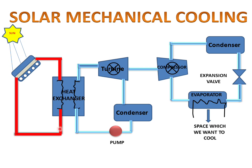The water is circulated through the heat exchanger, which exchanges heat with another liquid — a freon liquid. Heat exchange takes place, and freon vapors come out. These vapors go towards the turbine, and after the turbine they go towards the condenser.